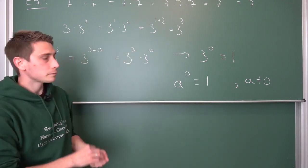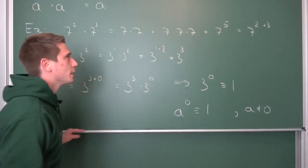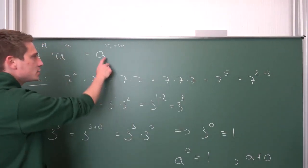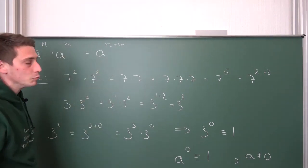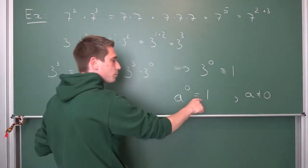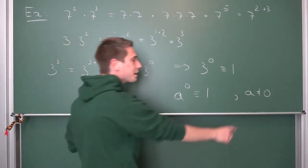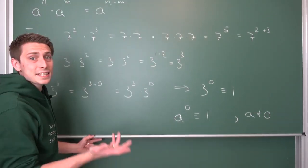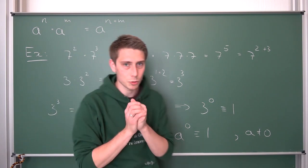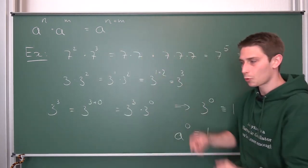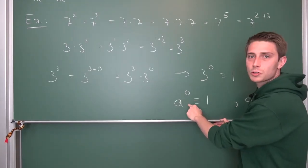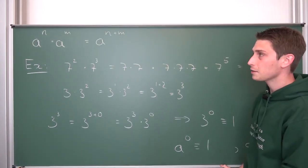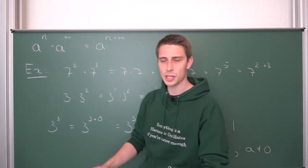Two things to take away from this video: a to the n times a to the m power is a to the n plus m power. And a to the 0 power is exactly equal to 1, if a is not equal to 0. This is it — not much more to do here, but it's extremely important. Especially this fact will be really important when talking about fractions and expanding fractions.